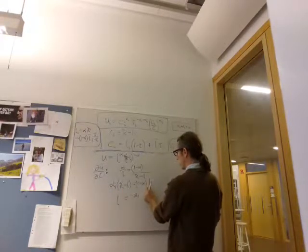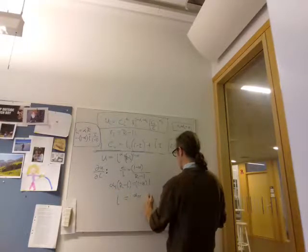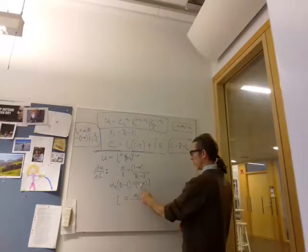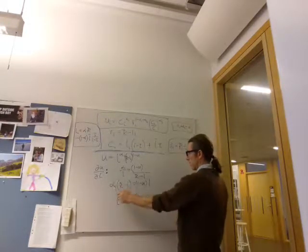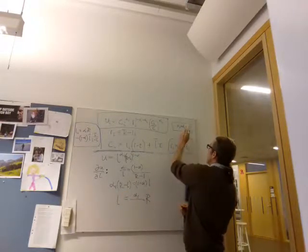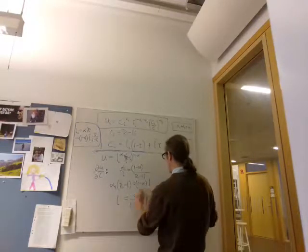And we have that L is equal to alpha 1 R. So we've brought this one over, and we've got alpha 1 R left. And then we need to divide through by 1 minus alpha plus alpha 1, which is 1 minus alpha 2.